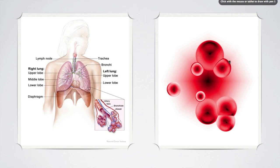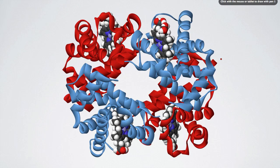Now in the red blood cells we have a special molecule and that molecule is called hemoglobin. You can see a three-dimensional image here of the structure of hemoglobin. This molecule is actually a protein, and this protein is the one responsible for picking up the oxygen.